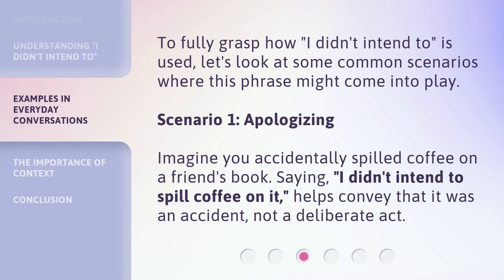To fully grasp how 'I didn't intend to' is used, let's look at some common scenarios where this phrase might come into play. Scenario 1: Apologizing. Imagine you accidentally spilled coffee on a friend's book. Saying 'I didn't intend to spill coffee on it' helps convey that it was an accident, not a deliberate act.